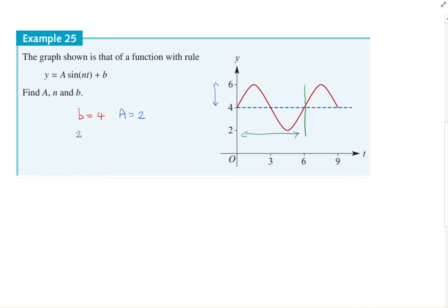So 2 pi on n equals your period. 2 pi on n equals 6. Move the n across and the 6 down. So n is equal to 2 pi on 6. So n is equal to pi on 3.